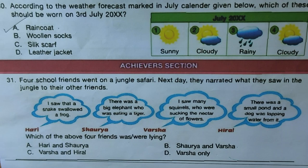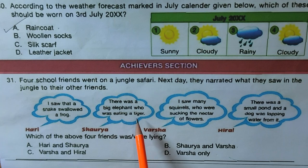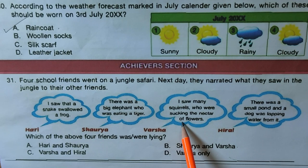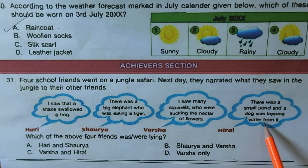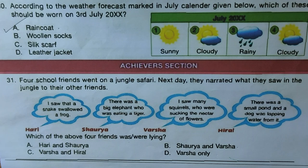Question thirty-one — Achiever Section: four friends narrated what they saw on a jungle safari. Harry says he saw a snake swallow a frog — possible. Saurya says a big elephant was eating a tiger — not possible. Versa says squirrels were sucking nectar from flowers — not possible. Hero says a dog was lapping water from a small pond — correct. So Saurya and Versa were lying. Among the options, Saurya and Versa are mentioned in option B, so we mark B as the correct answer.